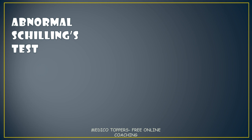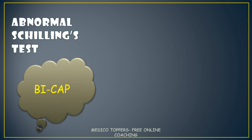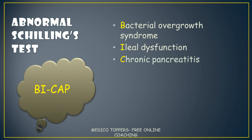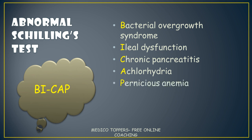Next comes the mnemonic regarding an abnormal Schilling's test — it is BICAP. B is for bacterial overgrowth syndrome, I for ileal dysfunction, C for chronic pancreatitis, A for achlorhydria, and P for pernicious anemia. Remember: for an abnormal Schilling's test, the mnemonic is BICAP.